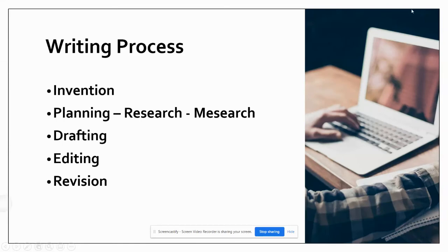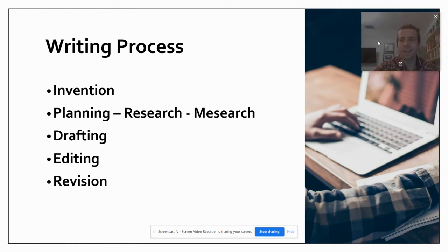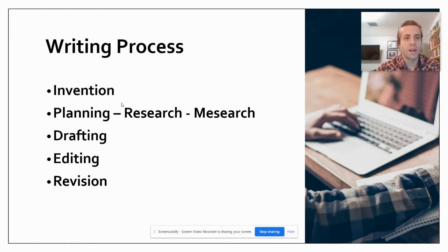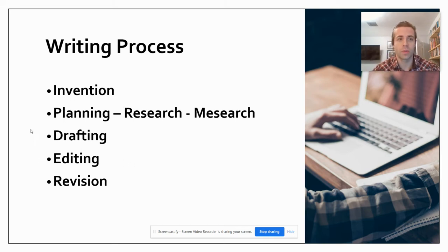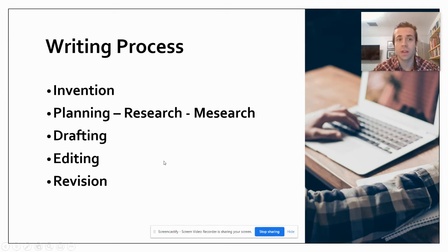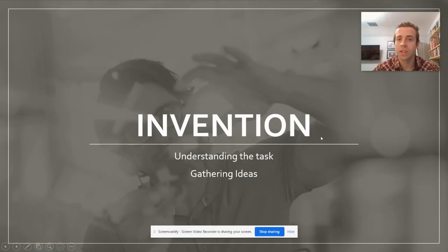Hey folks, today we are going to be talking about the writing process. Hopefully you already took a look through that video and you're able to differentiate that there are five different steps we're going to go through. First is invention, planning, drafting, editing, and then revision. So starting at the beginning, let's take a look at this idea of invention.